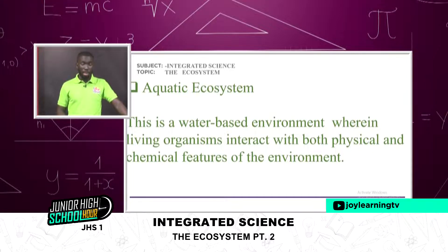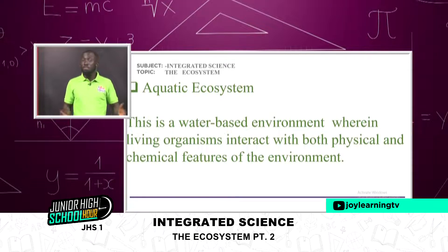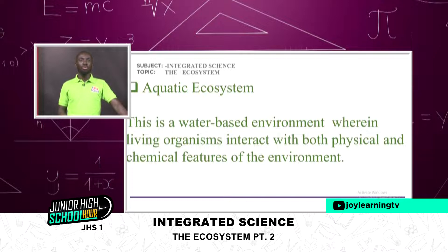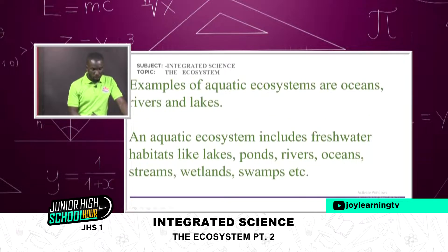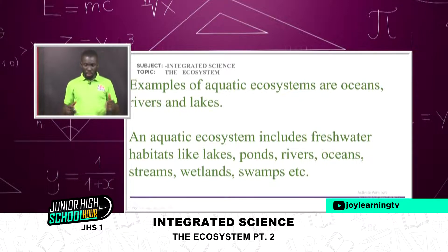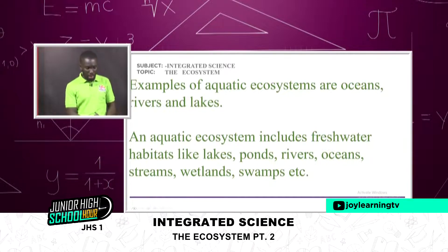The aquatic ecosystem features water-based living organisms such as fishes, whales, dolphins, sea creatures, and coral reefs, all made to live in those ecosystems. Examples include oceans, rivers, lakes, and other water bodies. An aquatic ecosystem includes freshwater habitats like lakes, ponds, rivers, oceans, streams, wetlands, and swamps.